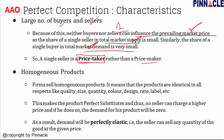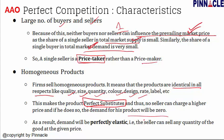Firms sell homogeneous products, meaning the products are identical in all respects like quality, size, quantity, color, design, rate, and label. The products which different firms are selling are all homogeneous — exactly the same in quality, size, and every aspect. This makes the product a perfect substitute, and thus no seller can charge a higher price. If a seller does so, the demand for their product will be zero, because every seller has the same product making them perfect substitutes.